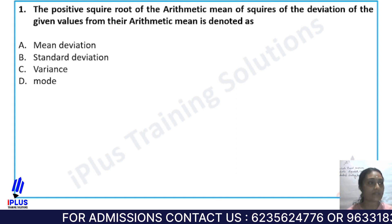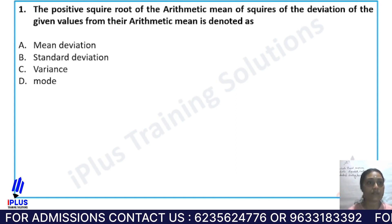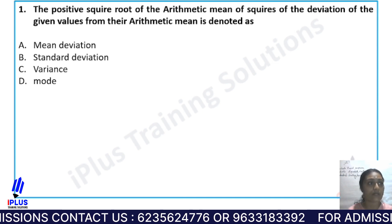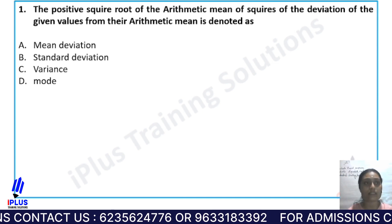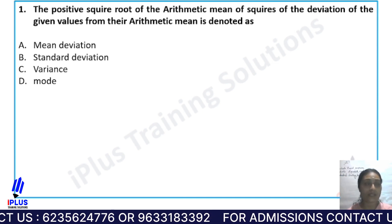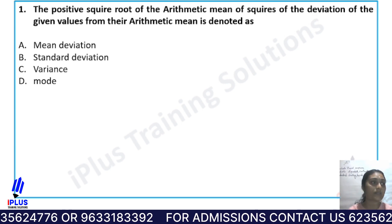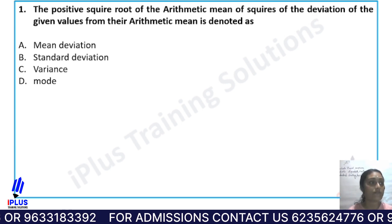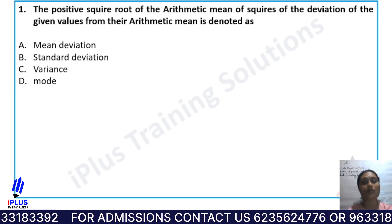Question 1: The positive square root of the arithmetic mean of squares of the deviation of the given values from their arithmetic mean is denoted as — Option A: mean deviation, Option B: standard deviation, Option C: variance, and Option D: mode.